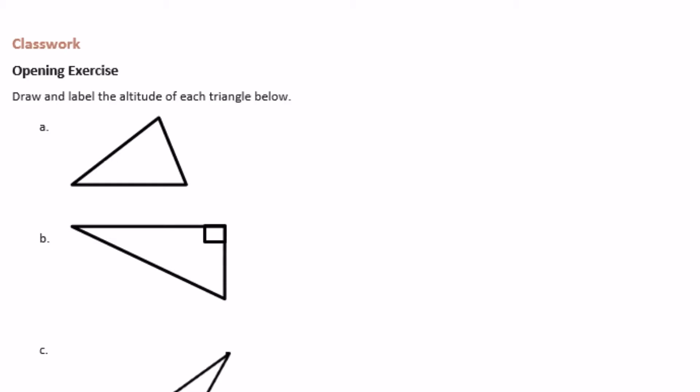Draw and label the altitude of each triangle below. Remember that the altitude is a line that is perpendicular to the base, meaning it creates a 90 degree angle. So we're going to make something that's perpendicular to the base. I'm going to use this as my starting point and just create a line that's perpendicular, so it creates a 90 degree angle. That is what we're going to call the altitude.